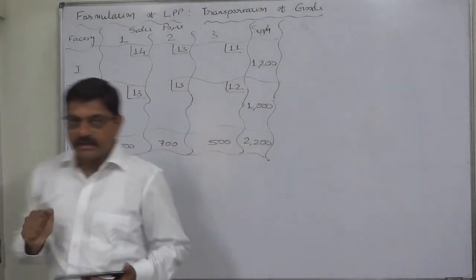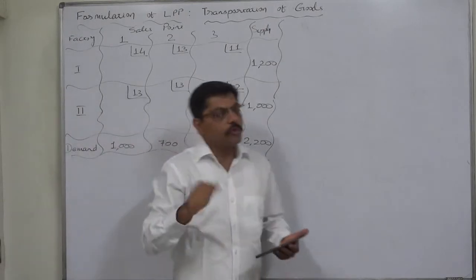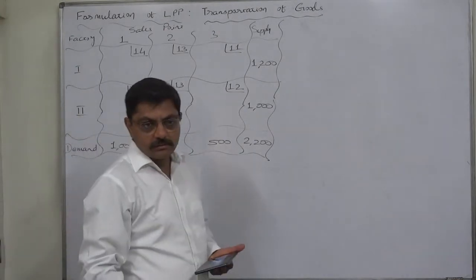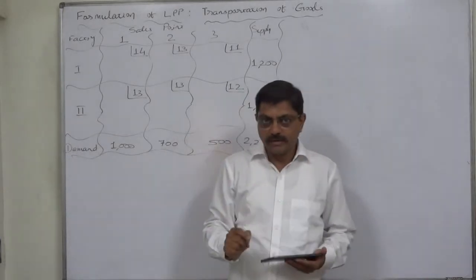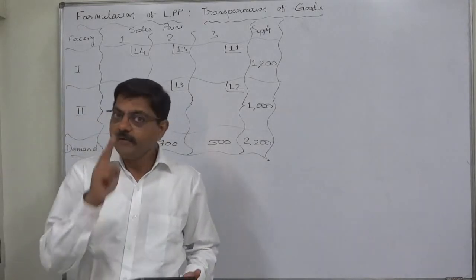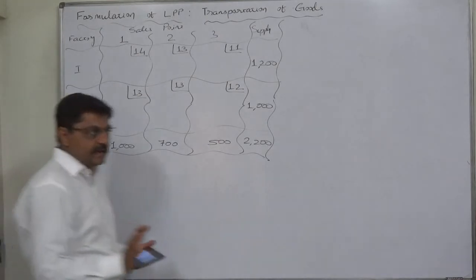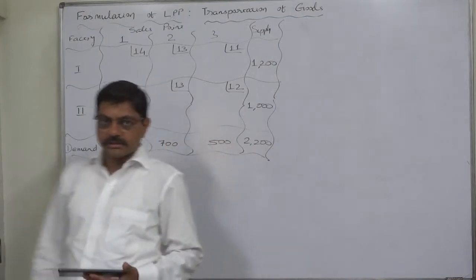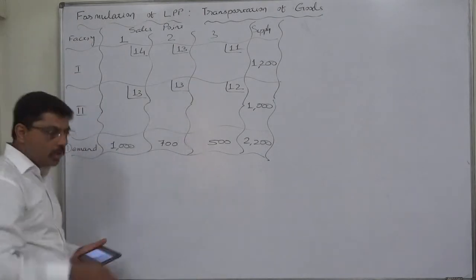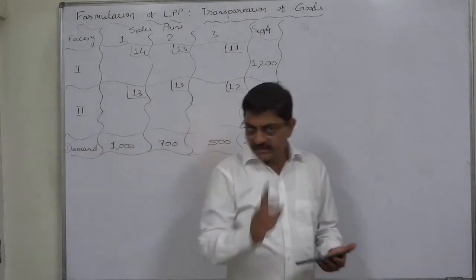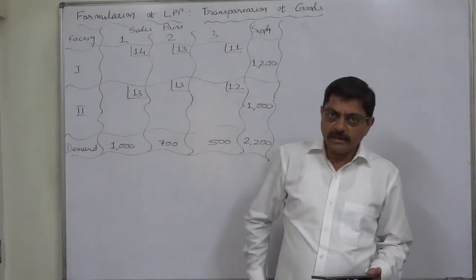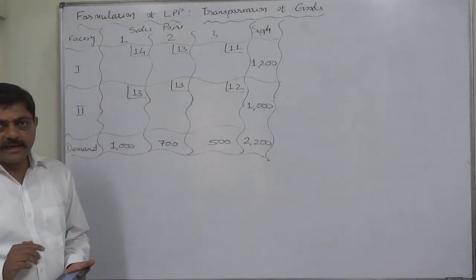5, 6 variables. But this time we are going to learn how to formulate an LPP for a transportation problem by taking just two variables. We can solve this transportation problem by graphic method only if we have two variables. We can take two variables only if there are two rows and three columns, or there are three rows and two columns — this is the biggest restriction. In this case it is possible, so we are going to take two variables only.